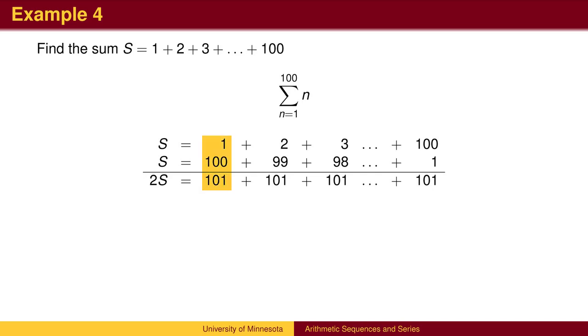1 plus 100 is 101, 2 plus 99 is 101, etc. We now have 100 pairs of numbers that each add to 101. So 2S is 101 times 100. We can then divide by 2 to get the answer.